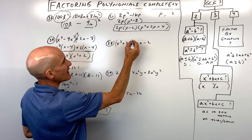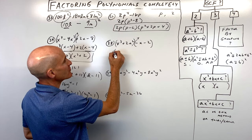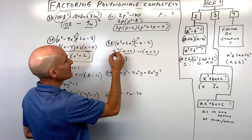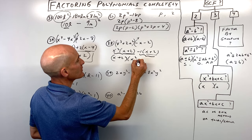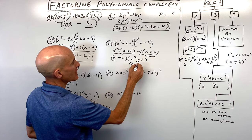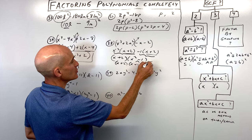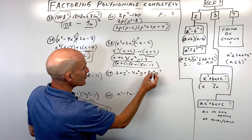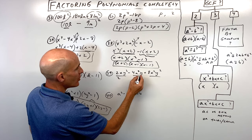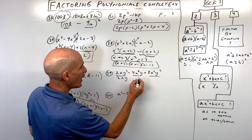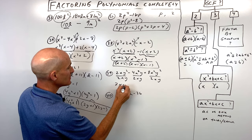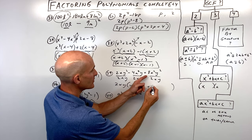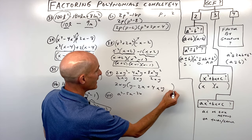Number thirty-eight has four terms. Factor by grouping: factor out x squared from the first pair, then factor out negative 1 from the second pair. We have x plus 2 in common — factor it out, leaving x squared minus 1. But x squared minus 1 is a difference of two squares, so we factor it as x plus 1 times x minus 1, and bring down the x plus 2. Number thirty-nine: factor out a greatest common factor of 2xy. Dividing gives y, 2x, and 4xy. That's fully factored.